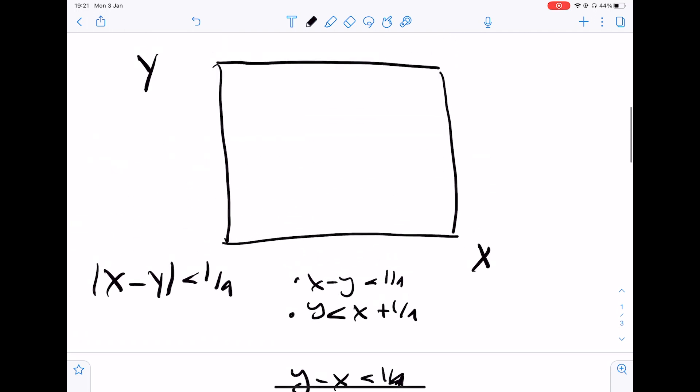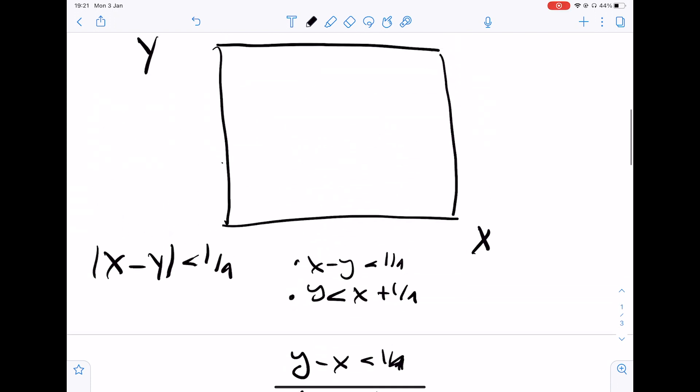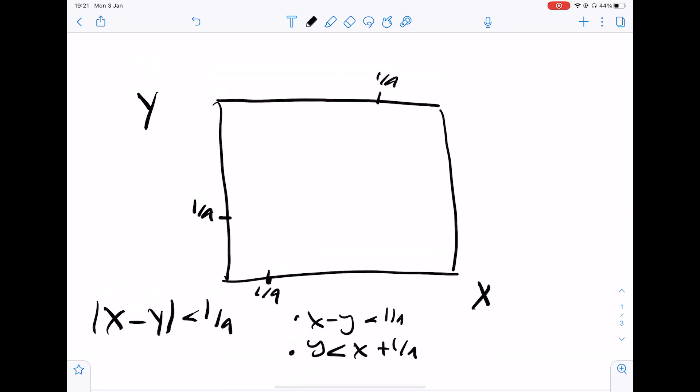And so plotting these out, if we turn these equalities into equals we can get a plot such as this about there and we're going to do some red. So this is going to be our line of y equals x plus one quarter.